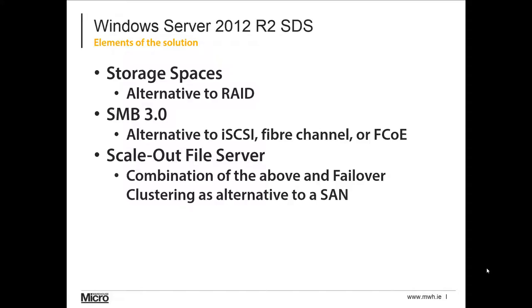And then there's the Scale-Out File Server architecture, which combines all the other pieces of the Microsoft software solution into an architecture giving us scalable, transparent failover, and continuously available file shares. So we get low cost, high performance, highly — in fact continuously — available file shares, and we can store our virtual machines, databases, and web content on that SAN-alternative architecture.